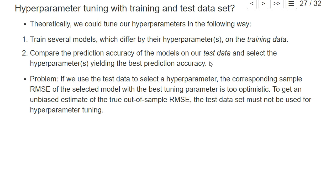However, if we use the test dataset in this fashion to select a hyperparameter, then the resulting root mean squared error on the test dataset for the selected model would be too optimistic. Because if we give 10 models to the test dataset and we pick the one with the lowest RMSE, just by picking the one with the best prediction accuracy on the test dataset, we basically get a bias.